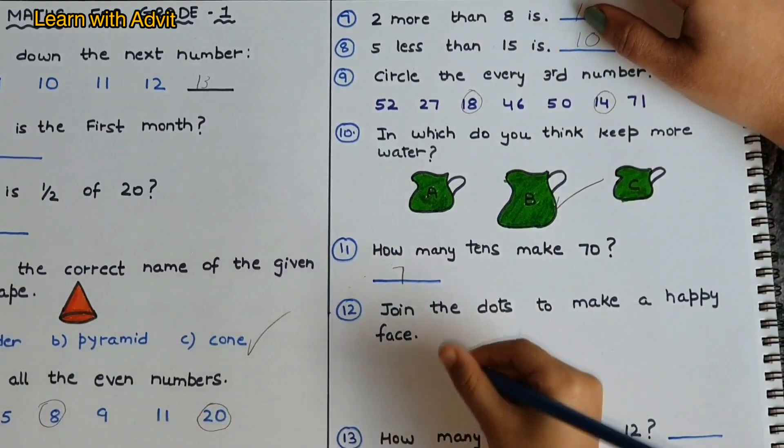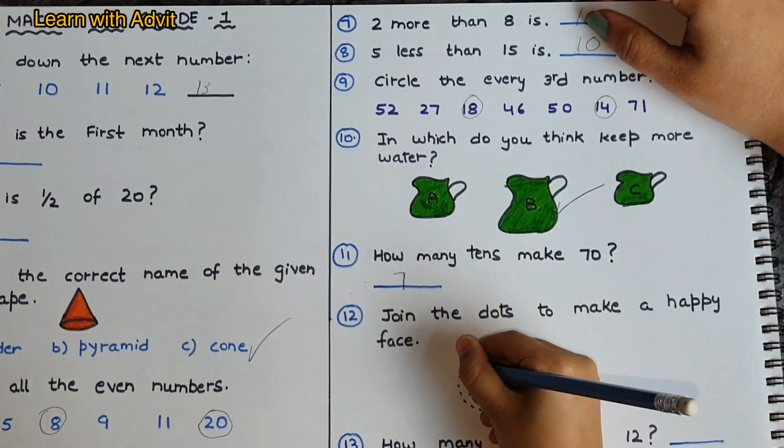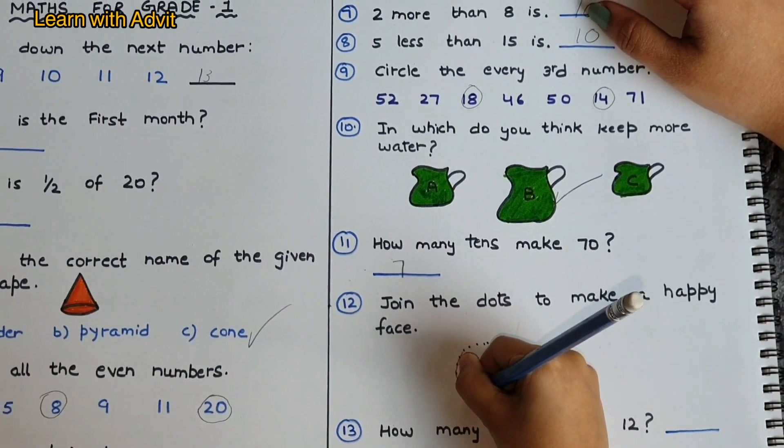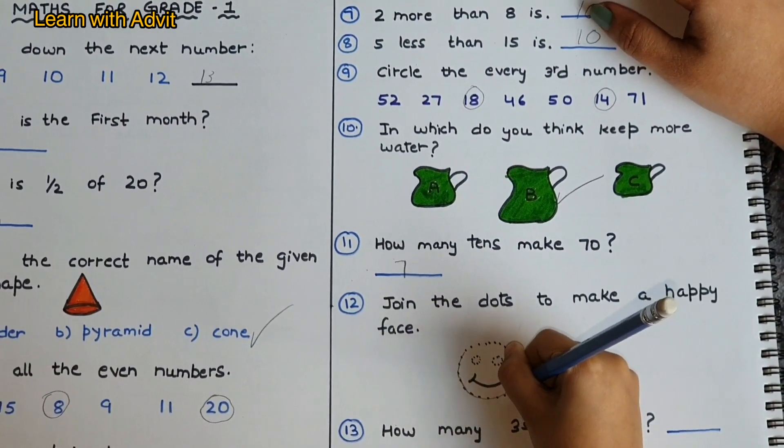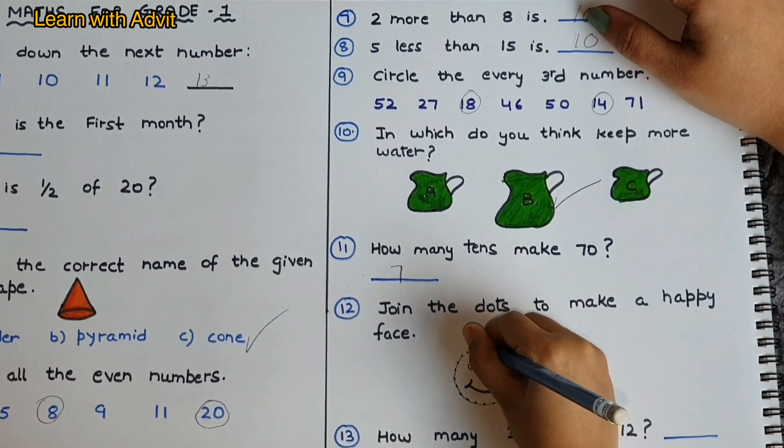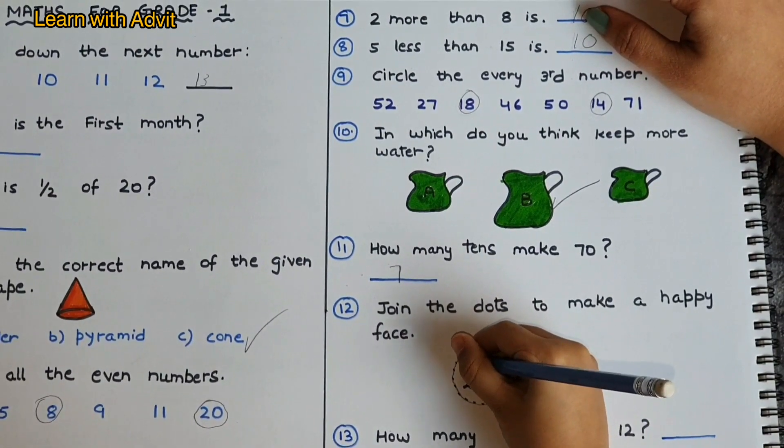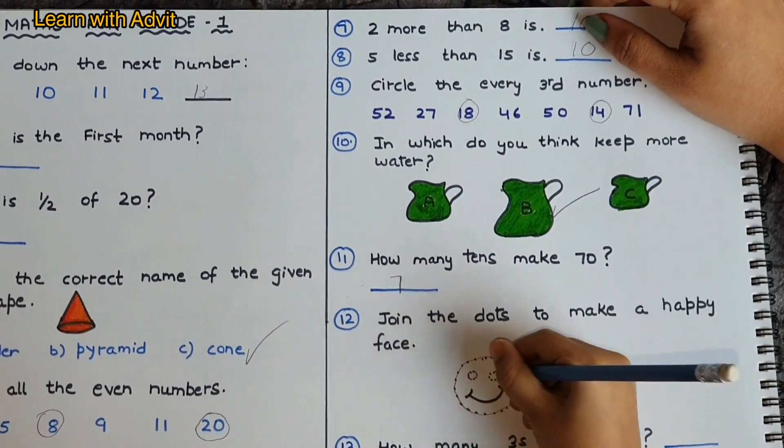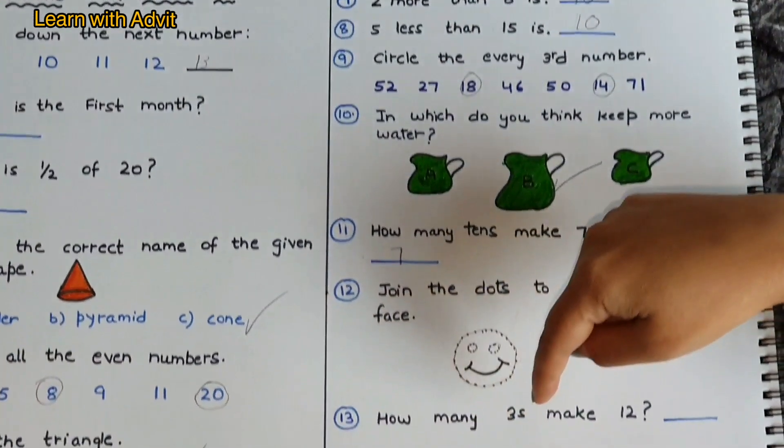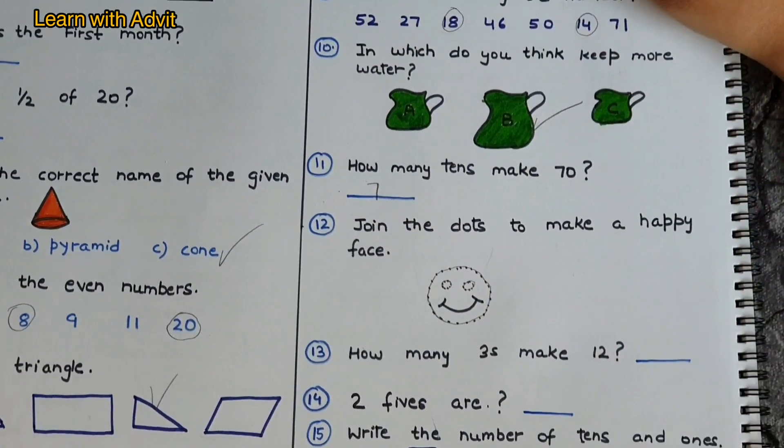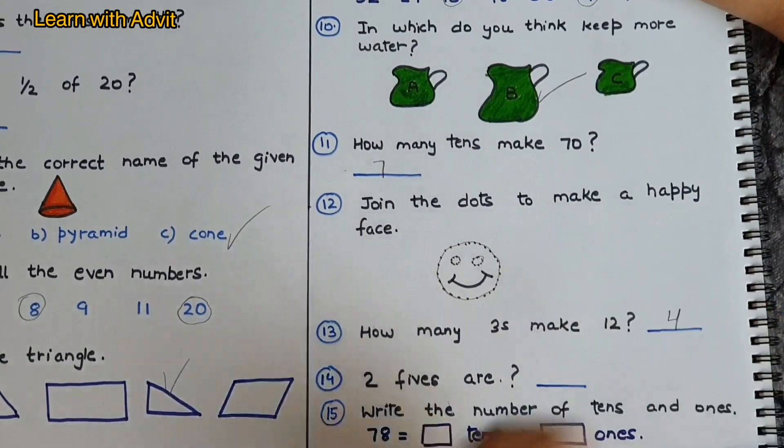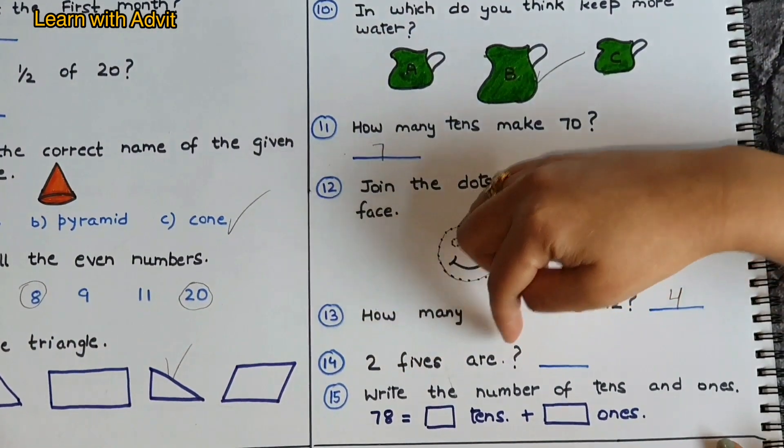Join the dots to make a happy face. How many fours make twelve? Three fours are twelve, very good. Two fives are ten, very good.